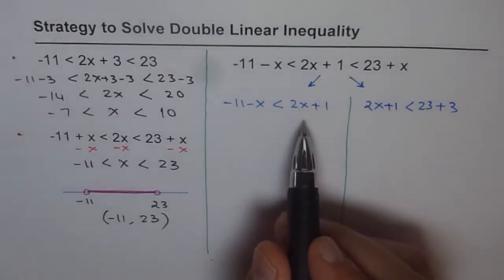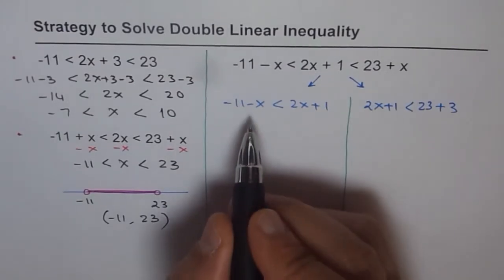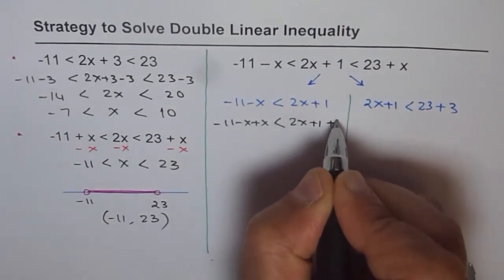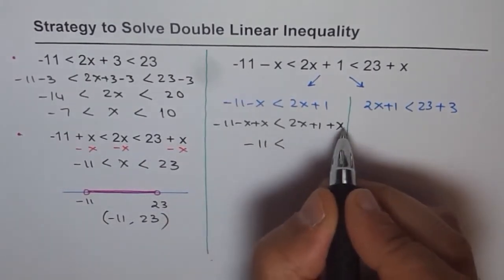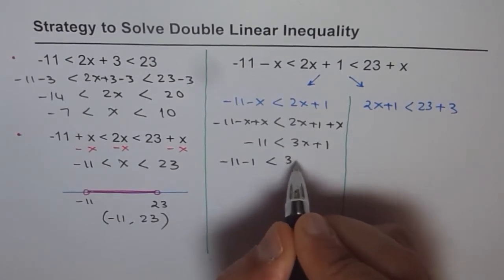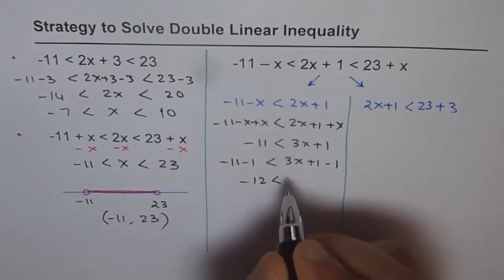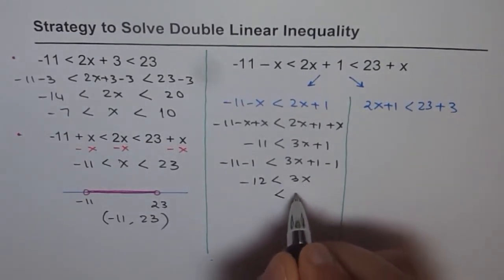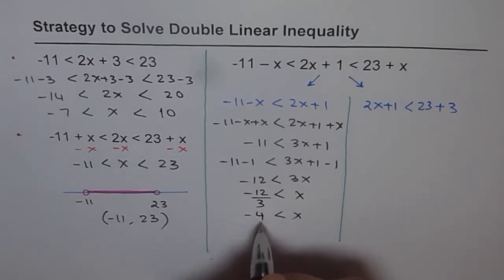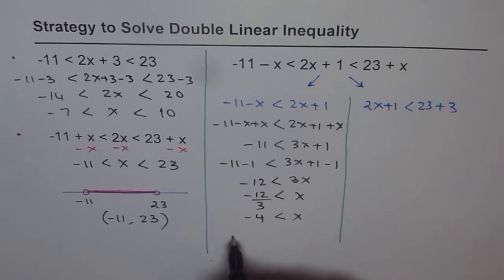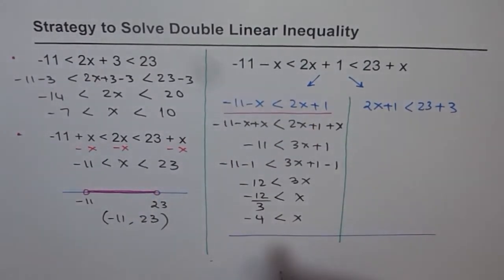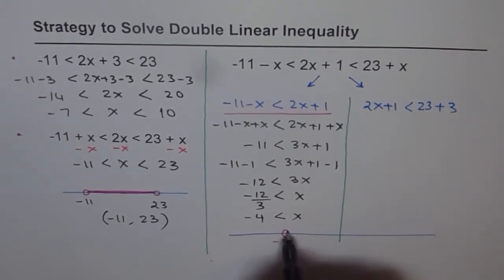We can solve Part 1 as a single linear inequality. Adding x to both sides: minus 11 minus x plus x is less than 2x plus 1 plus x, giving us minus 11 is less than 3x plus 1. Taking away 1 from both sides: minus 12 is less than 3x, so x is greater than minus 12 divided by 3. The solution for Part A is x is greater than minus 4. On a number line, the solution extends to the right from minus 4.